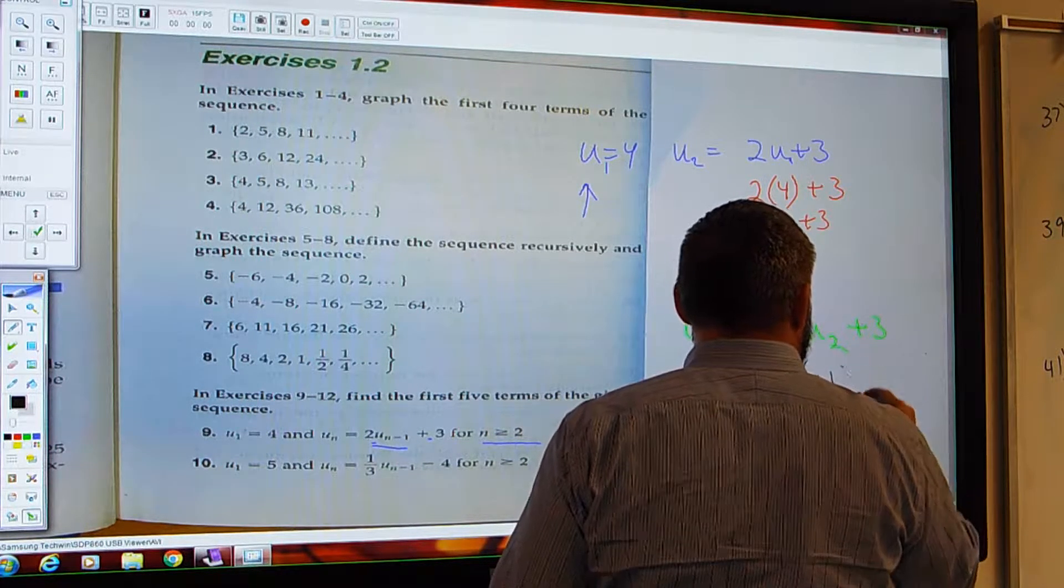So U sub 1, right? 2U sub 1 plus 3. What is U sub 1? 4. So it's 2 times 4 plus 3. Which is? 9.